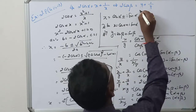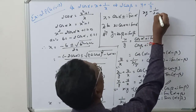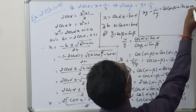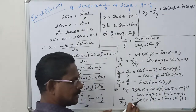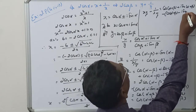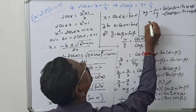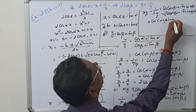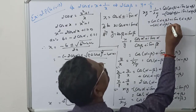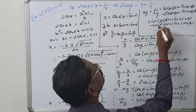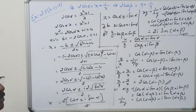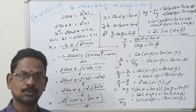Now for xy minus 1/xy: cos(α + β) + i sin(α + β) minus of [cos(α + β) minus i sin(α + β)]. The cos terms cancel, leaving 2i sin(α + β). So xy minus 1/xy equals 2i sin(α + β). This is the second part. I am going to explain the third and fourth parts in the next video. Study well.